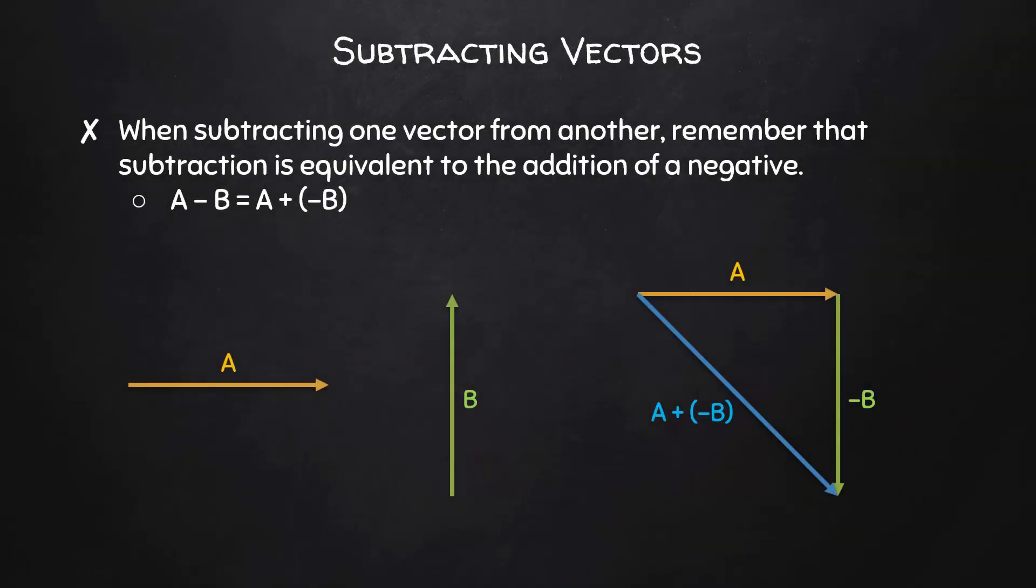One last thing. If we needed to subtract vector B from vector A, we could instead add vector A to the negative of vector B using one of the previous methods.